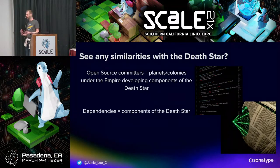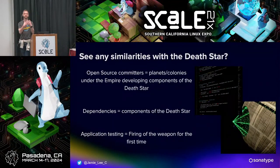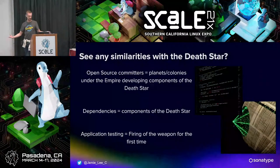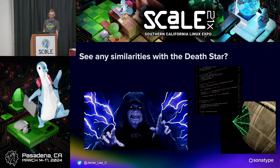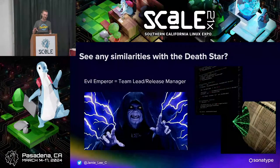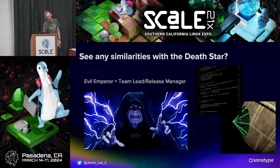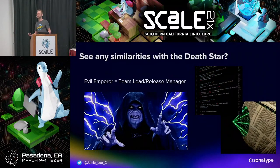So what are the similarities between what we do as engineers and what happens with the Empire and the Death Star? Open source committers are like the planets and colonies developing different parts of the Death Star. Dependencies are like components of the Death Star. Application testing is firing the Death Star's weapons, making sure you can destroy something. And I like to think of the evil Emperor as being kind of like our team leads — they have the final say in everything.